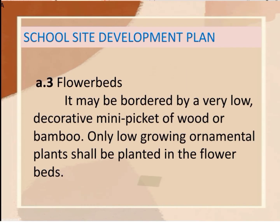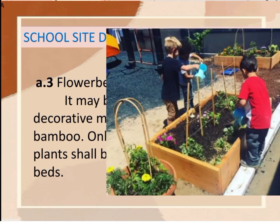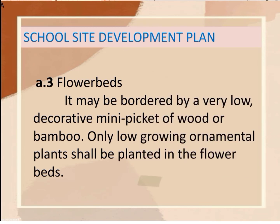Next are the flower beds. The space around the buildings may be made into flower beds for further visual effect. It may be bordered by a very low decorative mini-picket of wood or bamboo. Only low-growing ornamental plants shall be planted in the flower beds.